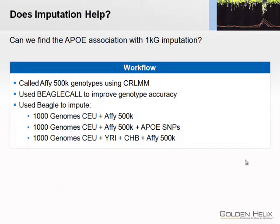So the question was: if we hadn't genotyped those two SNPs through low-throughput means, could we have taken 1000 Genomes data and imputed those APOE SNPs and found a significant association, or at least found some compelling evidence? We used C-REALM and BEAGLE Call, and then we did three different runs on chromosome 19: the 1000 Genomes CEPH 60 parental individuals imputing with the AFI 500K; doing that a second time where we included the APOE SNPs to see how it fills out the nearby region.